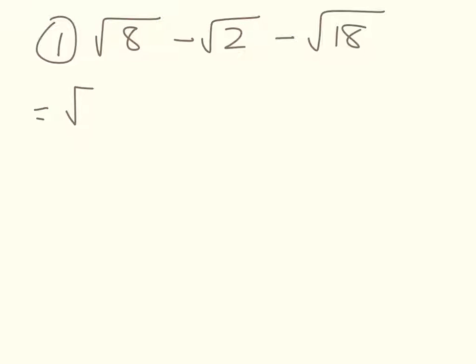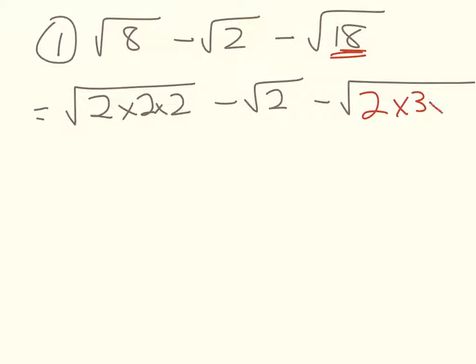So I'm going to go really slowly on that first one. The square root of 8 is the square root of 2 times 2 times 2. I can't do anything with the square root of 2, so that's just going to sit there. And the square root of 18, we're going to write as a product of its factors, so 2 times 3 times 3.